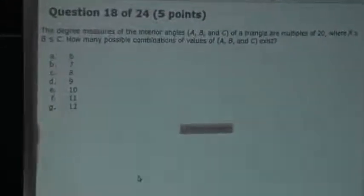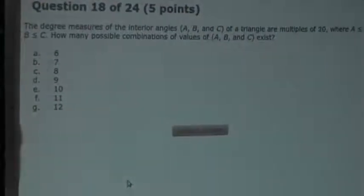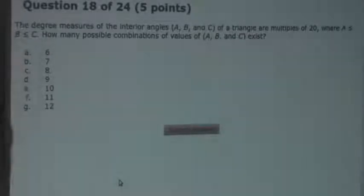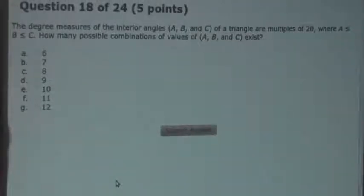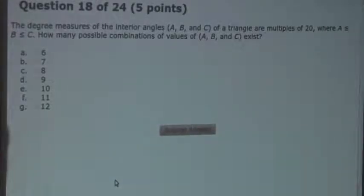So the question is: The degree measures of the interior angles A, B, and C of a triangle are multiples of 20, where A is smaller than or equals to B, smaller than or equals to C. How many possible combinations of values of A, B, and C exist?